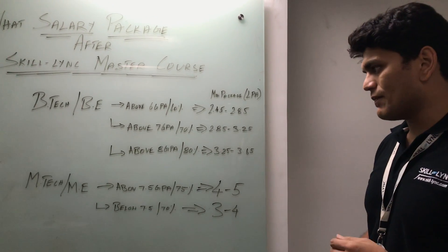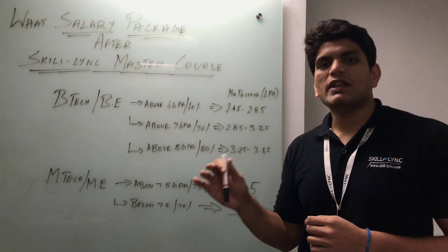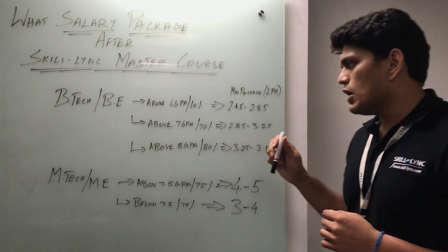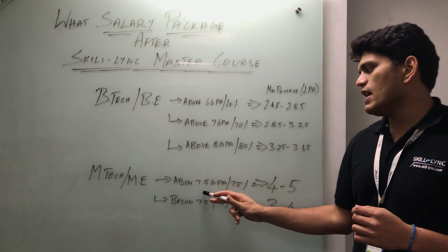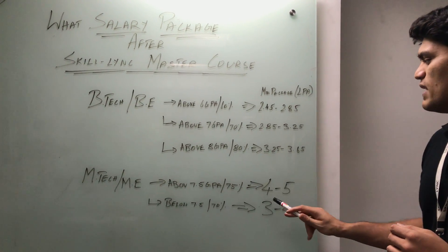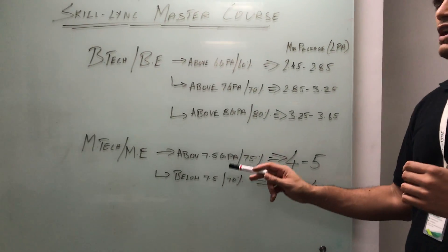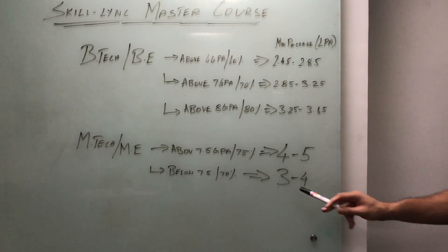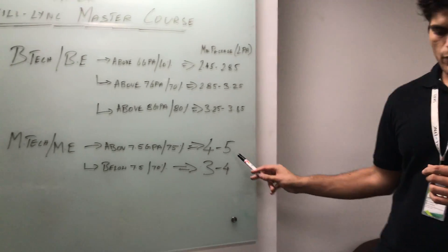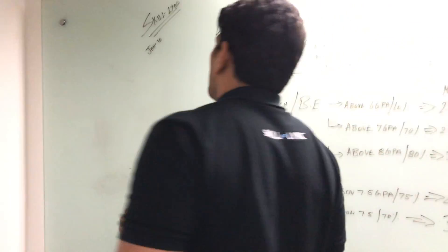If you're an MTech student with above 7.5 GPA, you can expect anywhere between 4 to 5 lakh package. If you're below 7.5 and above 60%, you can expect somewhere between 3 to 4 lakh package.